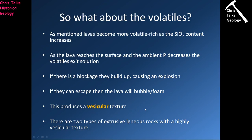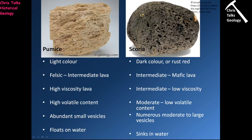Vesicular textures are commonly associated with rhyolites, andesites, and basalts as well. Even basalts with their very low volatile content can still form enough gas bubbles to produce a vesicular texture. Each vesicle represents a gas bubble that got stuck in the lava as it cooled down.